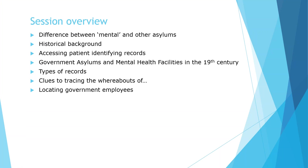We will begin with the difference between mental and other asylums, followed by a historical background of infirm and destitute asylums and mental health facilities. We will then move on to how you can access patient identifying information and the access conditions regarding these sensitive records. We will discuss the main government-run infirm and destitute asylums and mental health facilities in the 19th century, the types of records we hold, and how you can trace someone's whereabouts and status.